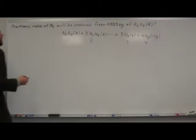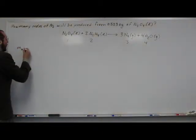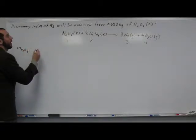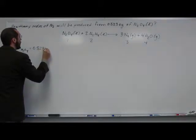So the mass of dinitrogen tetroxide, that equals 0.523 kilograms.